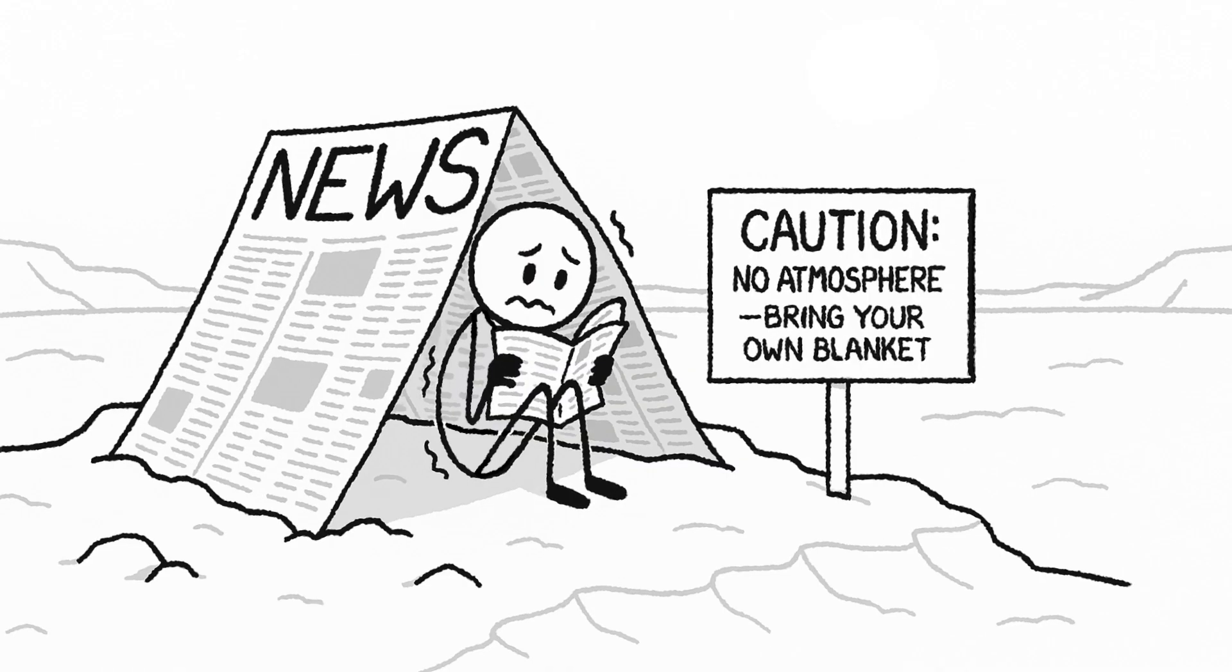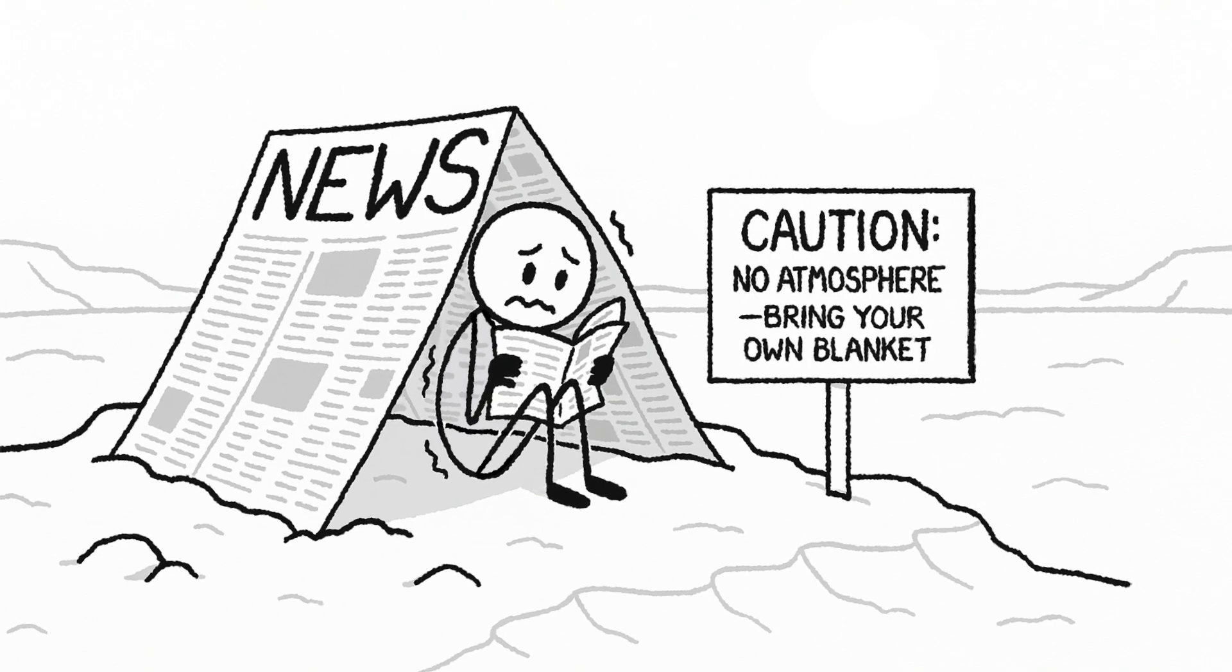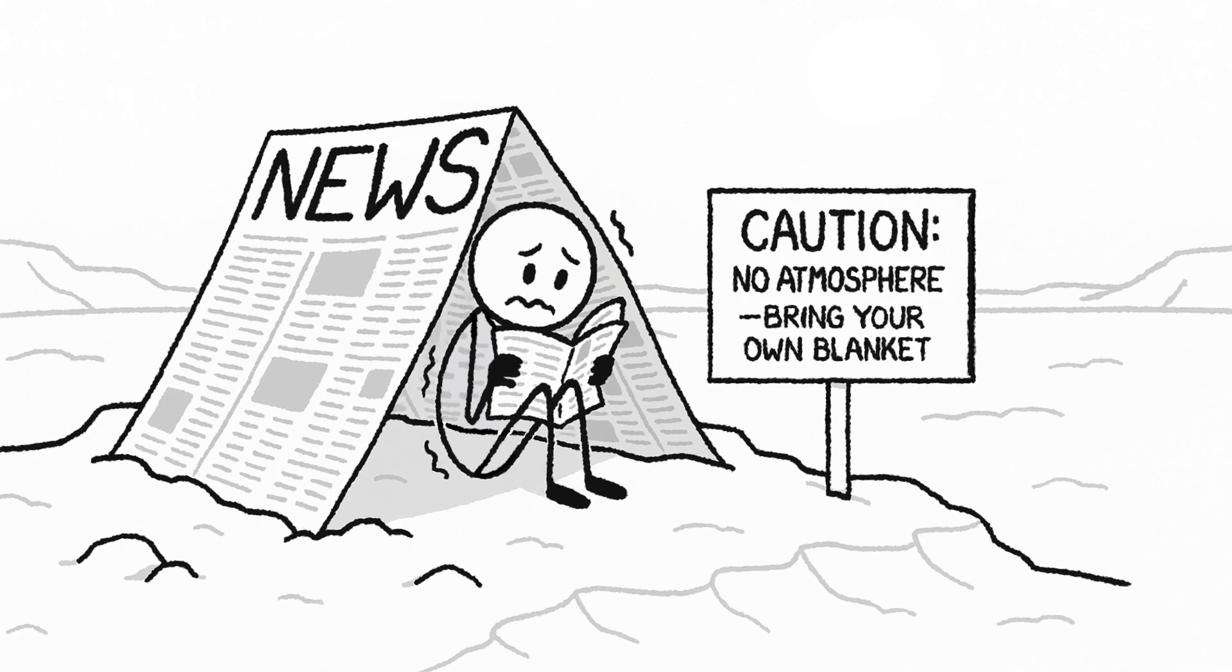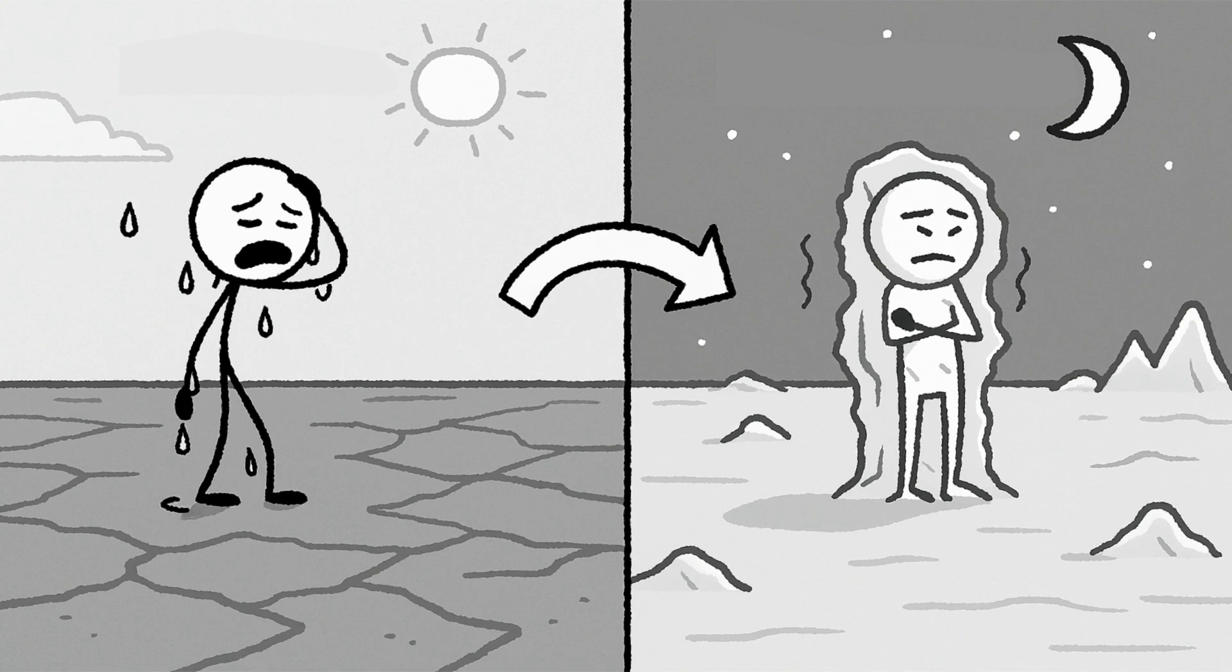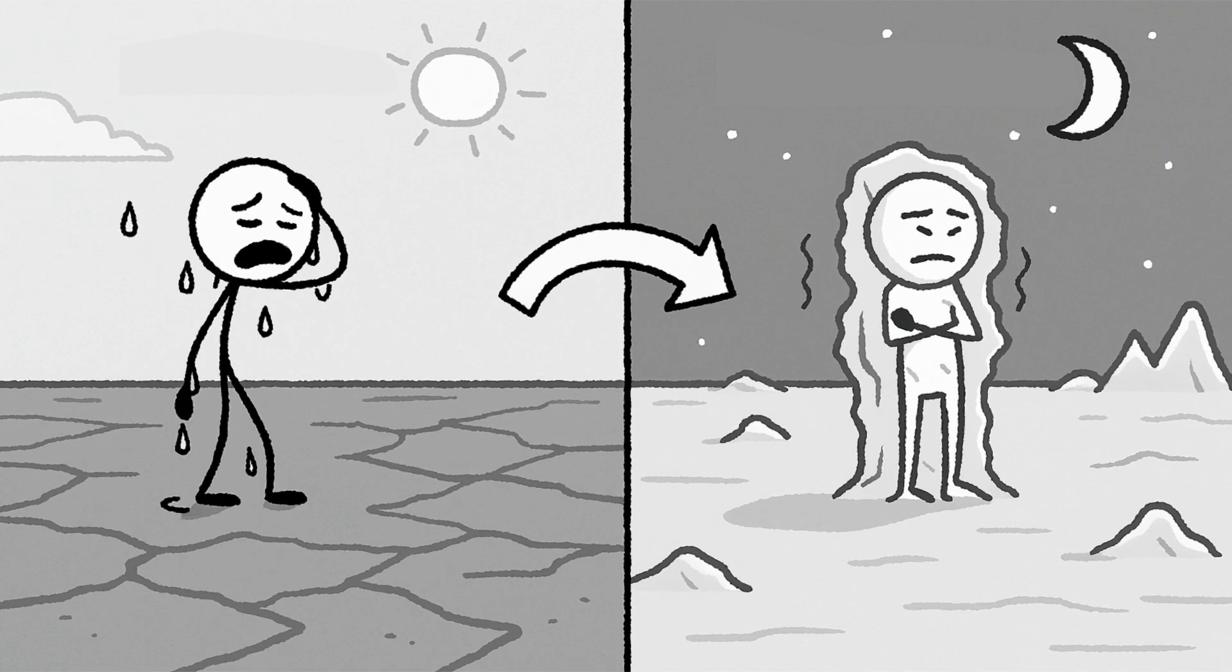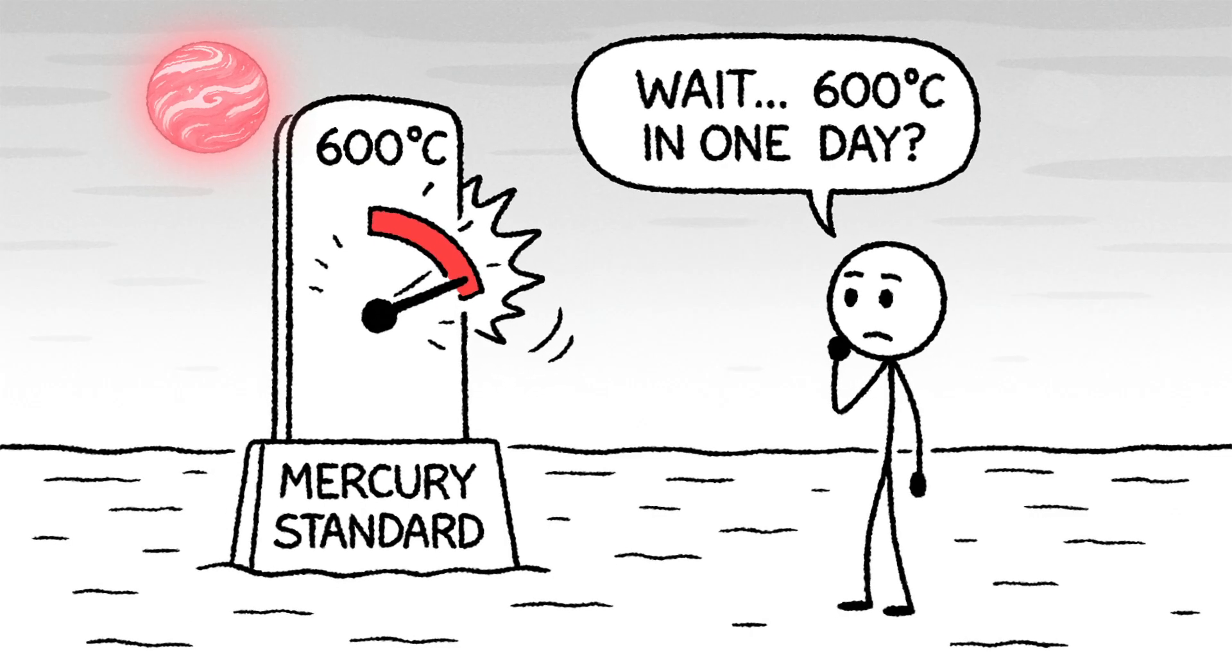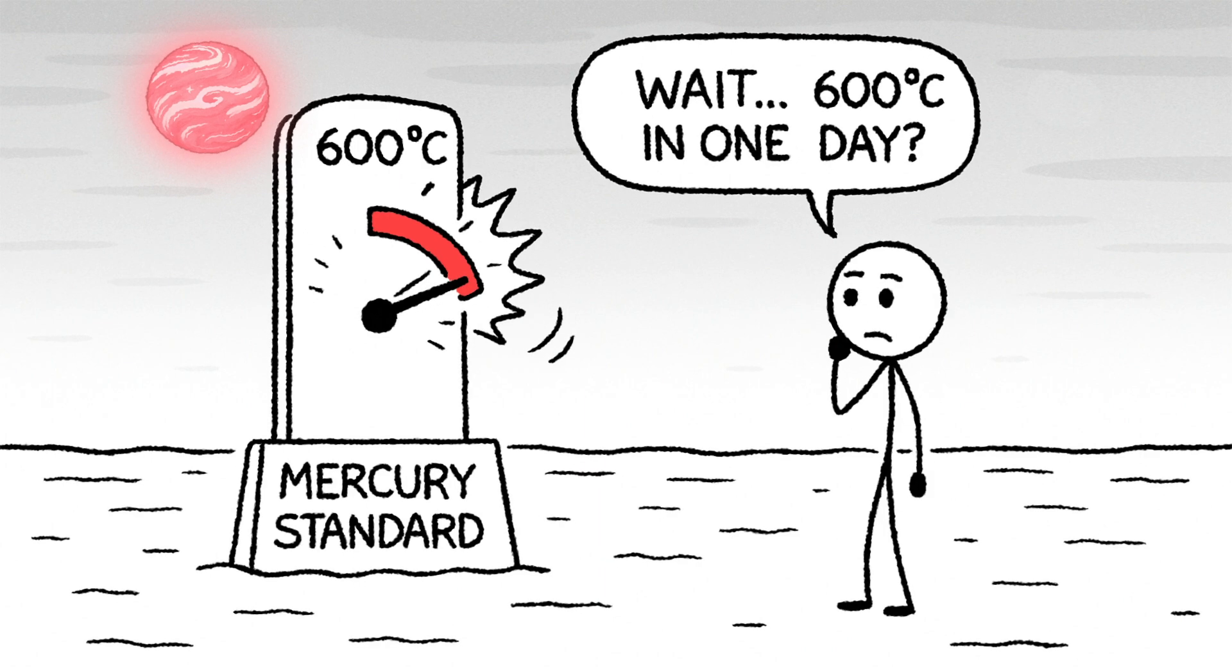But on the flip side, if the planet has little or no atmosphere, you get the opposite problem: no insulation. Without an atmospheric blanket to trap warmth, temperatures would swing wildly between day and night, scorching under direct sunlight, then plummeting to freezing as soon as darkness falls. Think Mercury, where surface temperatures can swing by over 600 degrees Celsius in a single day. Either extreme would make life as we know it complicated.